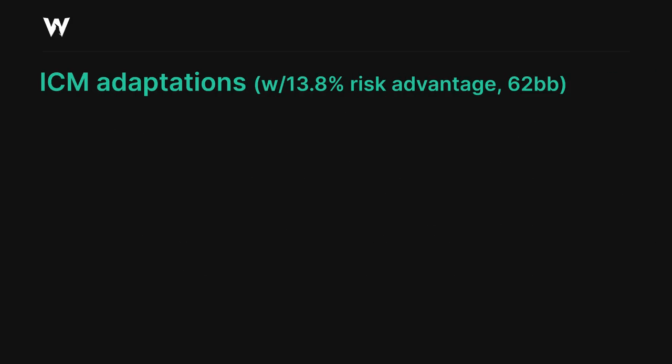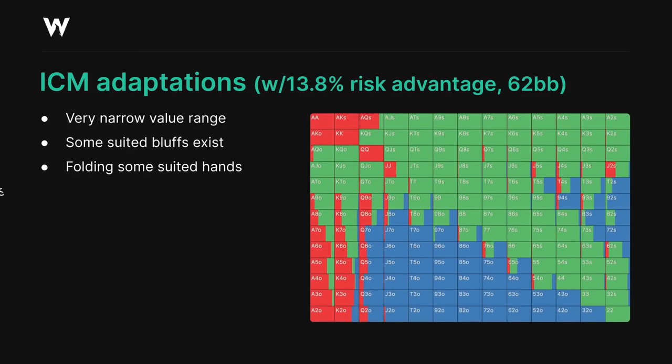The impact of ICM here is a little like what we might expect. In the first spot, where the big blind has a big risk advantage, the small blind isn't raising many hands to begin with — remember that almost pure limp strategy we saw before. But if they do, then the big blind gets to punish them with a lot of weaker offsuit 3-bet bluffs, and their value 3-bet range narrows to mostly queens plus and ace-queen suited plus.